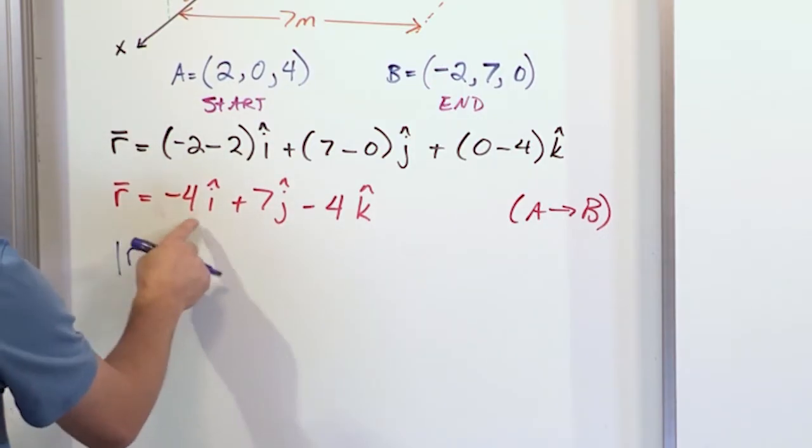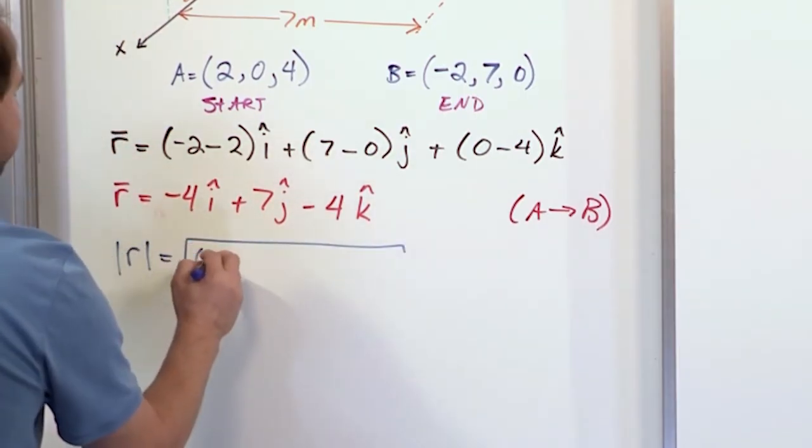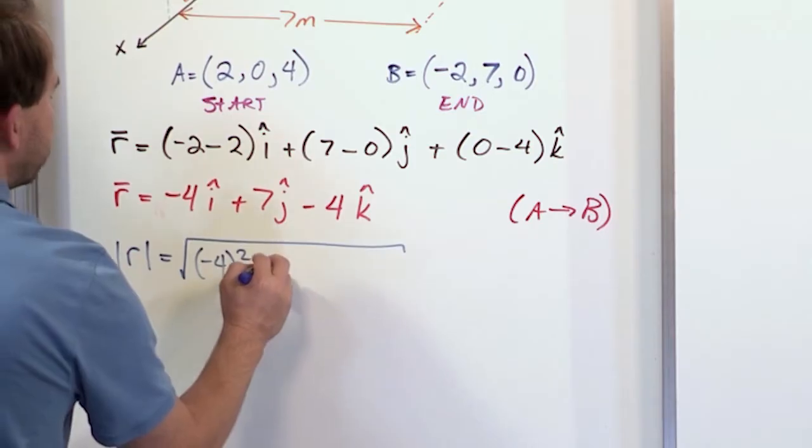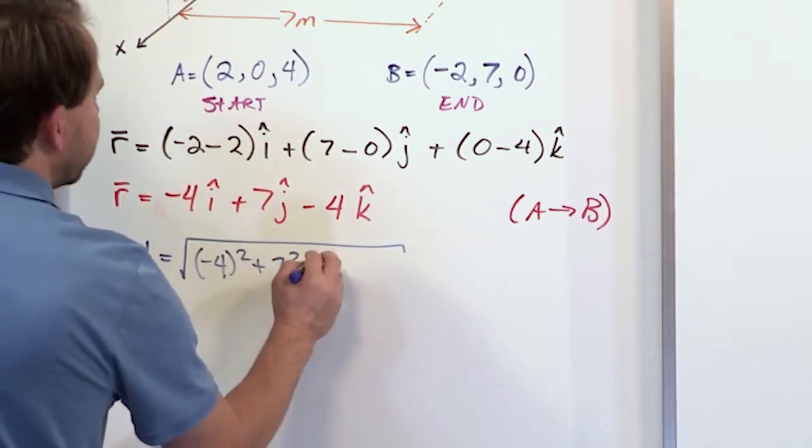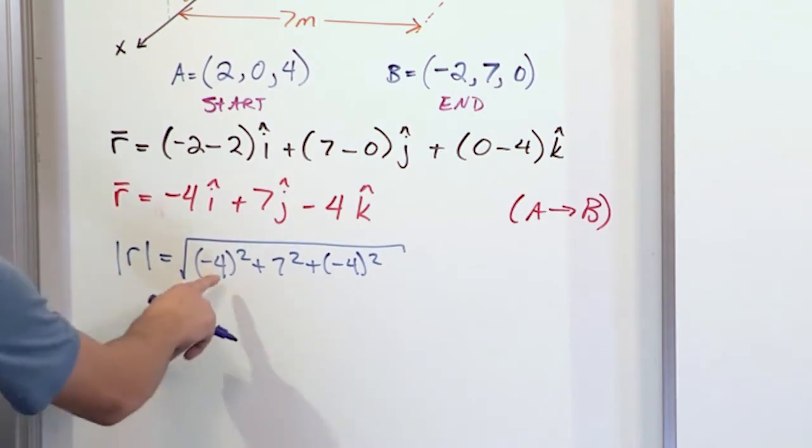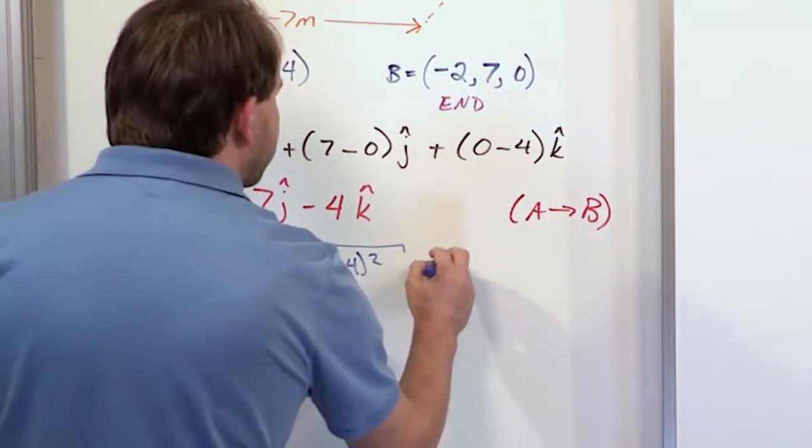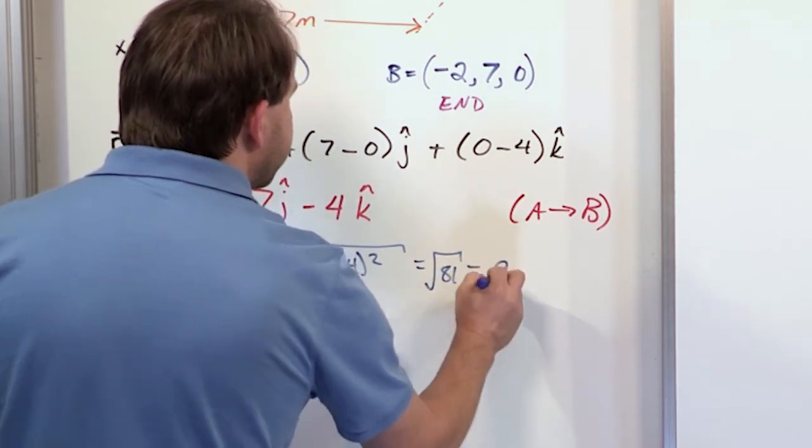So we found the position vector. What is the magnitude? The magnitude of any vector is the square root of the components squared. Negative 4 squared plus 7 squared plus negative 4 squared. When you square this and you square this and you square this and you add all this together, you get the square root of 81, which is simply 9. So that's a nice round number.